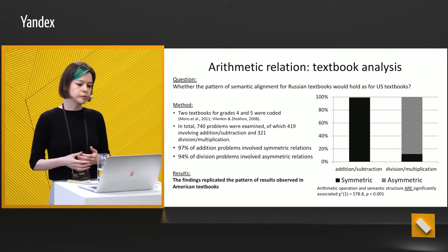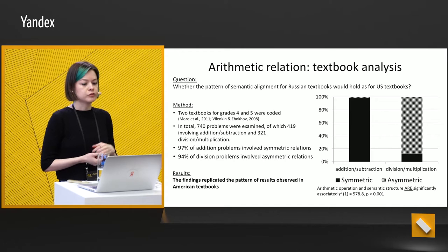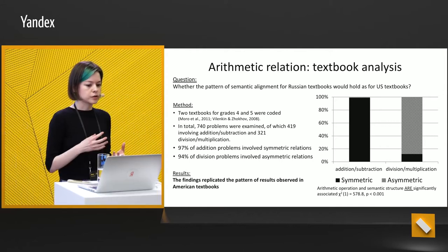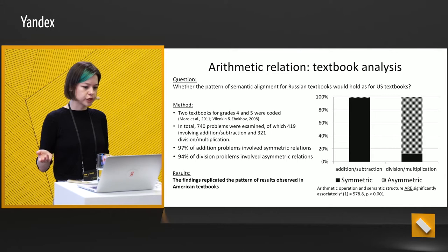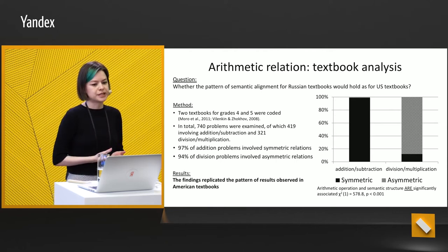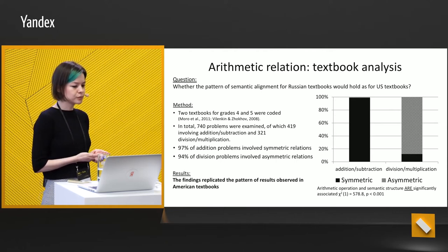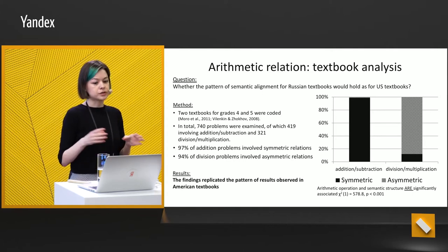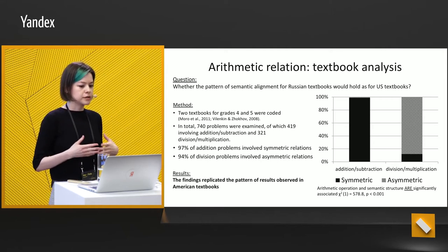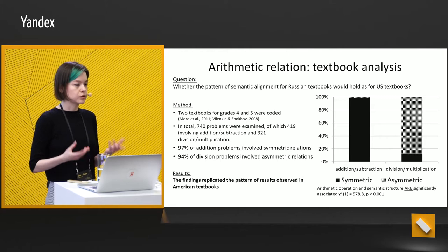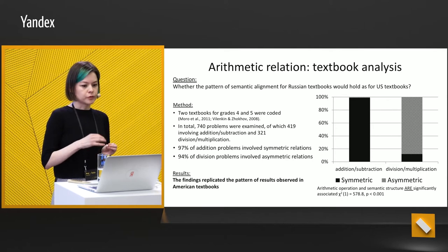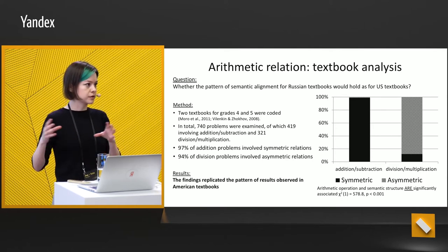We found that if a problem involved symmetric relations between objects, these problems usually included addition or subtraction. And on the other hand, the majority of problems that included an asymmetric relationship were problems on division. The conclusion: findings in Russia replicated the pattern of results observed in American textbooks, meaning Russian textbooks' math problems for arithmetic relations are aligned with semantic structure.